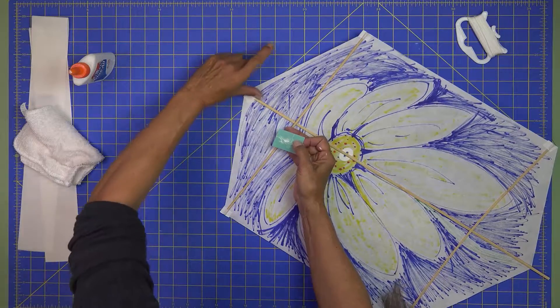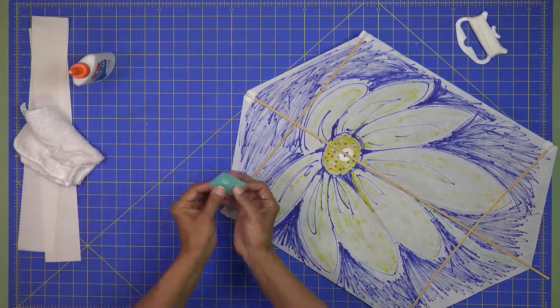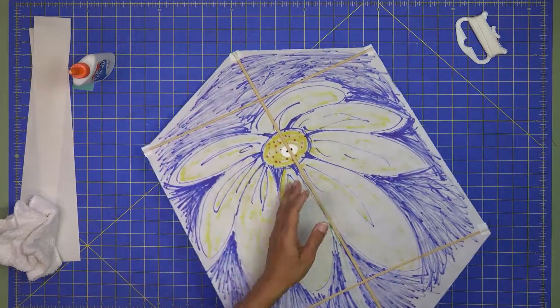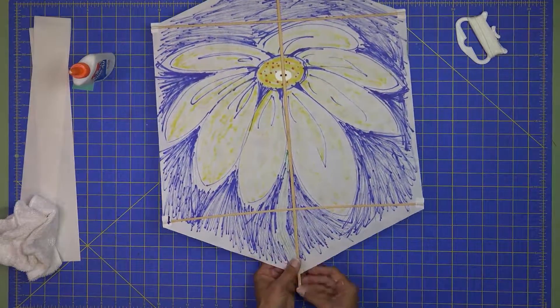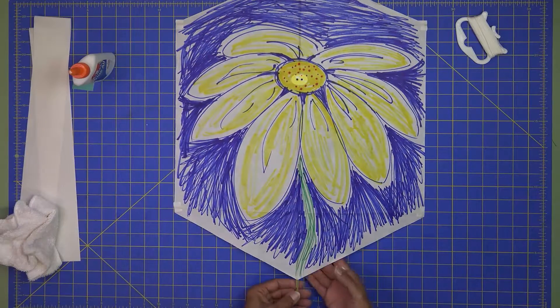So we'll fold this tab over. Now our kite has the bamboo frame on it. We can turn it over and see what we've done. Looks nice.